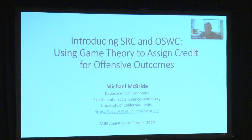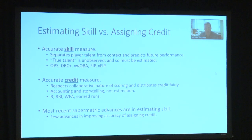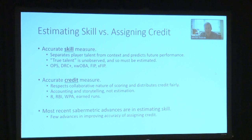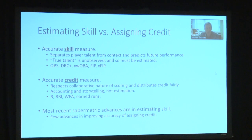I'm happy to talk about this new project. It starts with an important distinction in SABR metrics. We have measures that are intentionally designed to accurately measure skill. To do that, it's important to separate the player's talent from context. We want to predict future performance — the idea being that there's a true talent that's unobserved and needs to be estimated from noisy data. We have lots of measures of this: OPS, DRC+, wOBA, xwOBA, and so on.